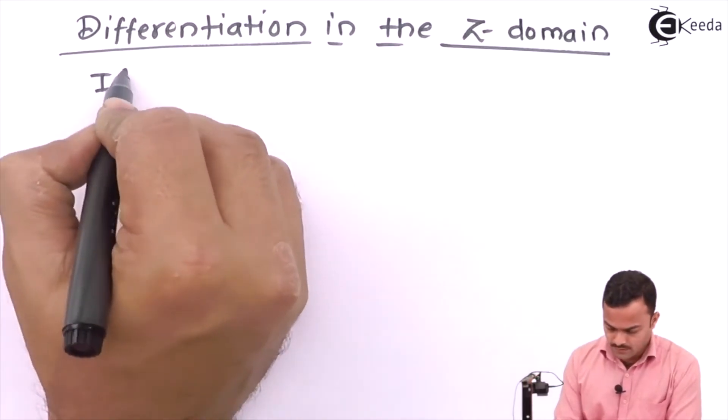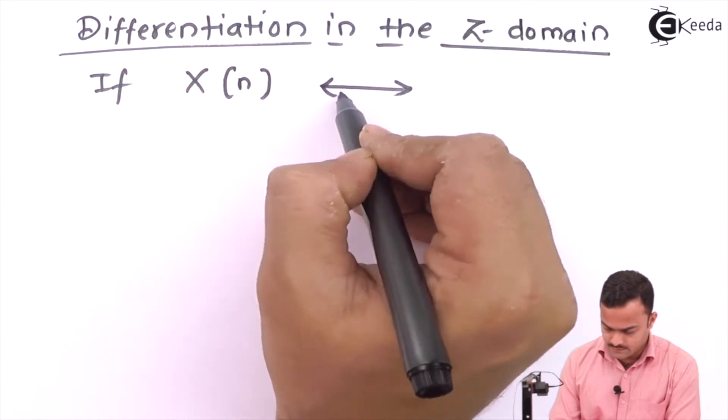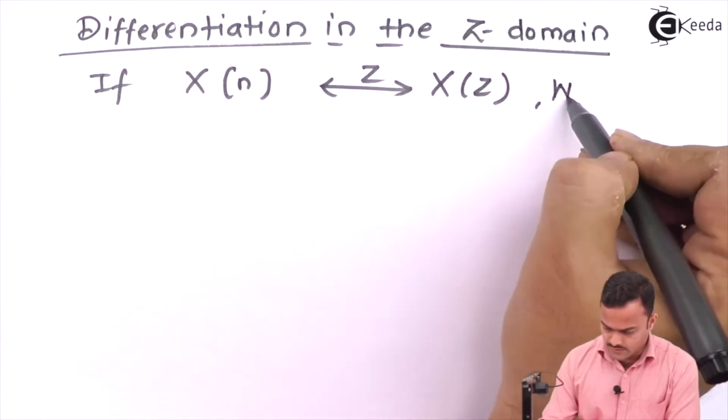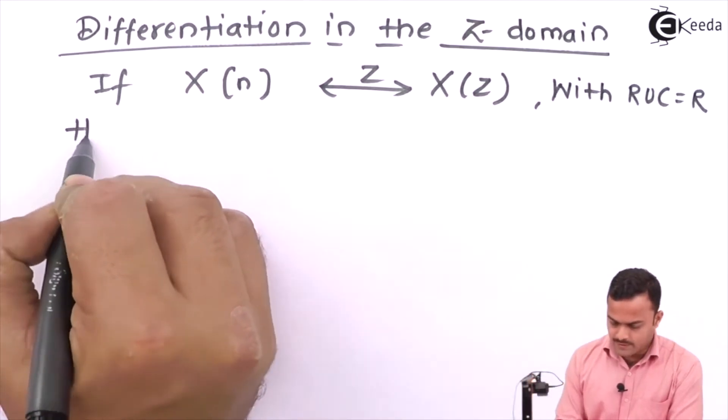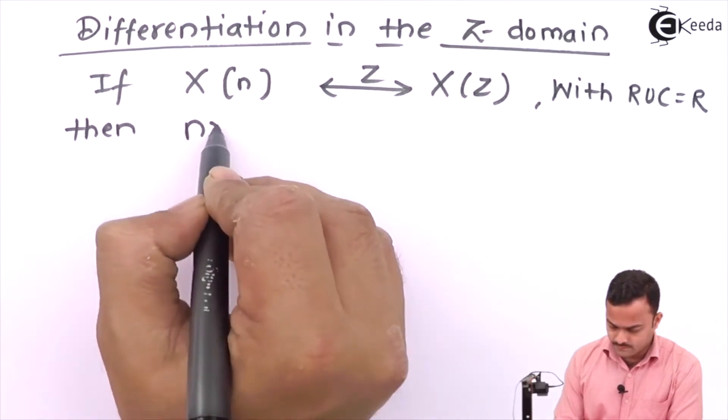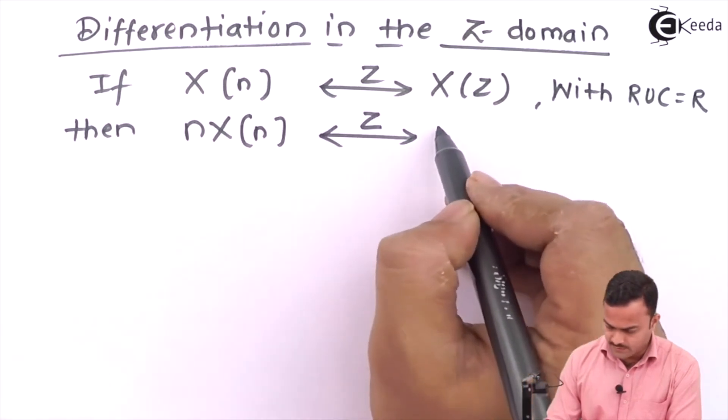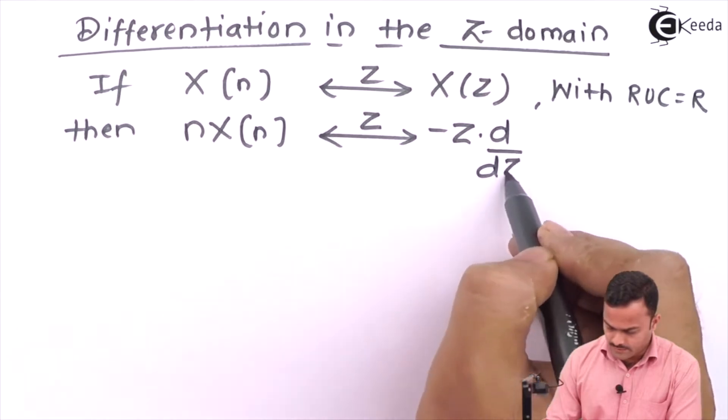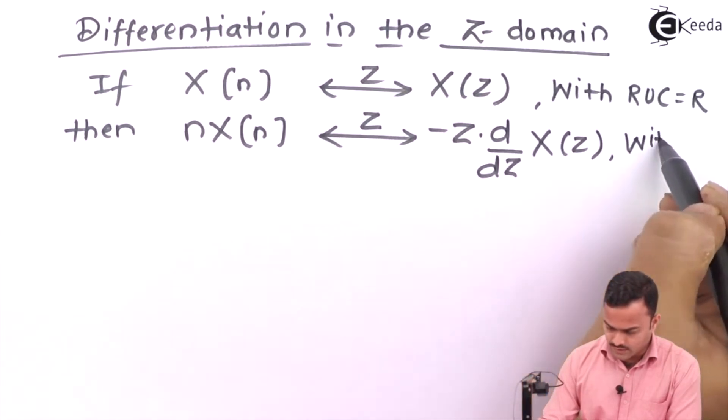It says, if signal X(n) has Z transform X(z) with ROC = R, and X(n) gets multiplied with n, then the Z transform will be minus z times d/dz of X(z), with ROC = R.